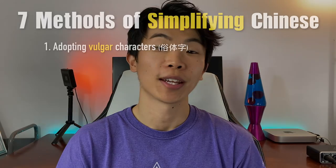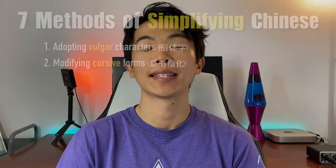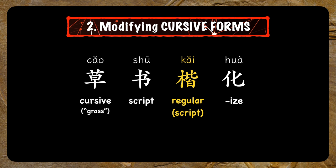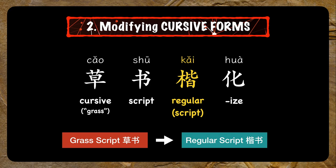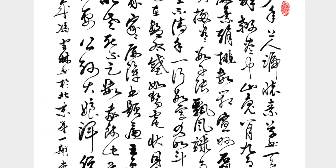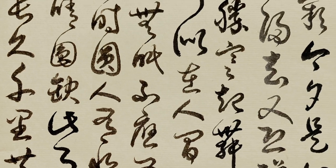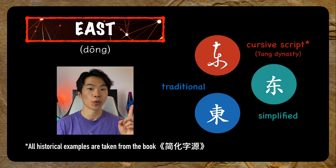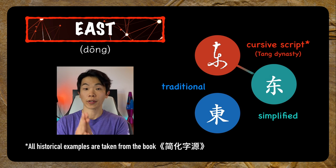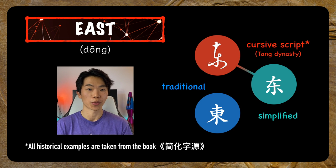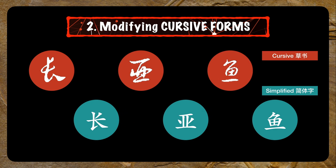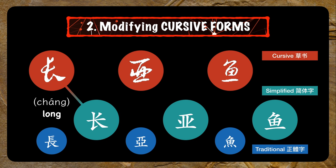The second method to simplify characters is to use their cursive forms. This method is extremely important because it accounts for more simplified characters than any other on this list. In Chinese, it's called 草书开花 — turning grass script into regular script. Grass script is a cursive form of Chinese that's existed since the Han Dynasty, combining many strokes into a few continuous strokes. You can see in this character 东 (east) that the simplified form basically takes the grass script and redefines the individual strokes. Other examples include 长 (long), 亚 (Asia), and 鱼 (fish).